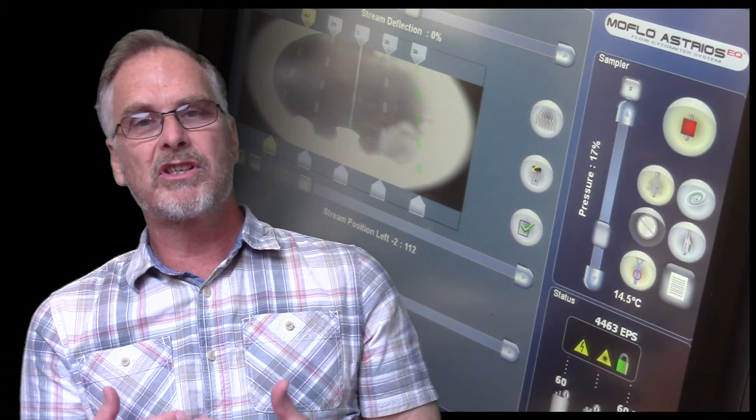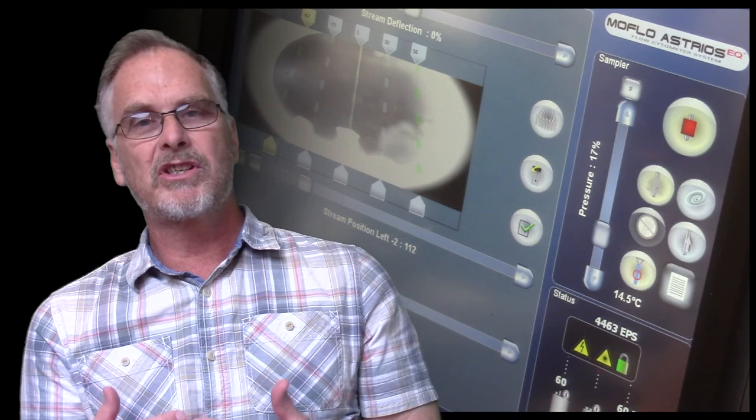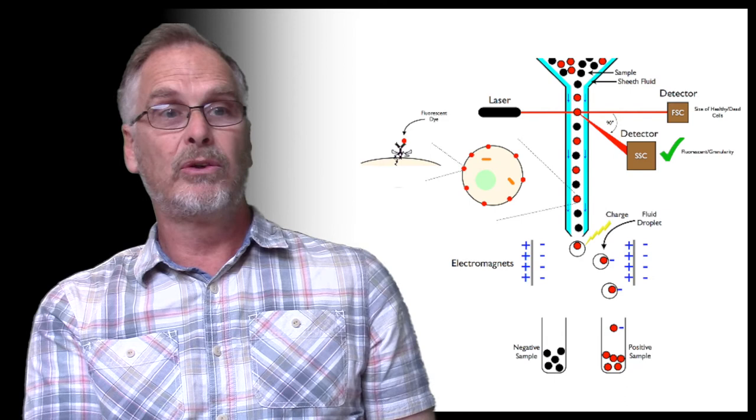The other instruments we have are for cell sorting, which is the next stage. It's exactly the same as a FACS analyzer, but instead of just looking at the cells and throwing them away, we can actually isolate them.